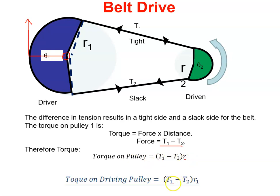For the example of this one, this is radius 1. So it's T1 minus T2 times radius 1. That's the torque on this pulley.